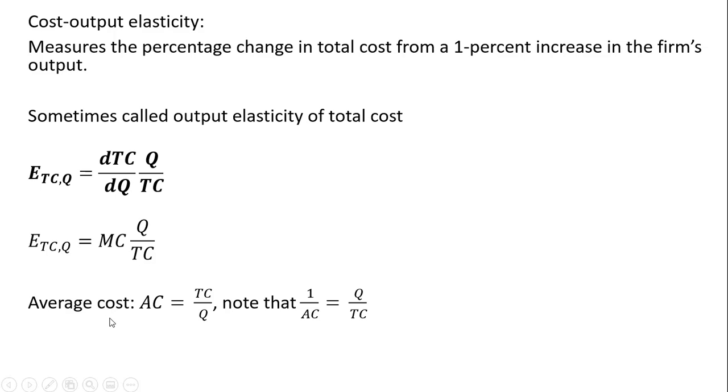And one thing to note, average cost is total cost divided by Q. So in this formula here, we have 1 over average cost. So we could also write the cost output elasticity as the ratio of marginal cost to average cost. So these are equivalent.